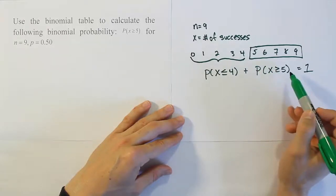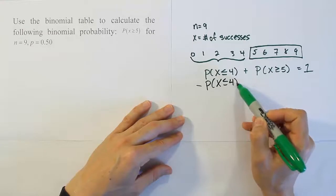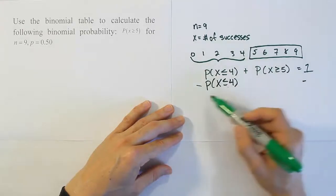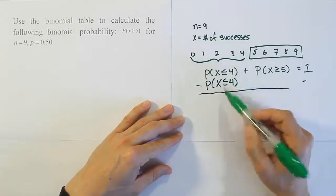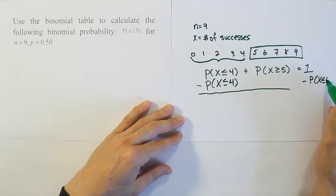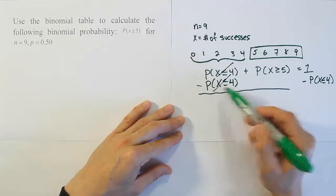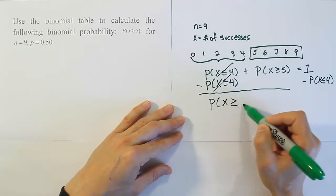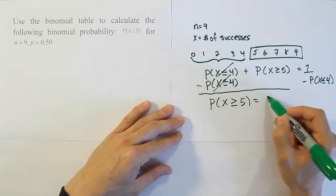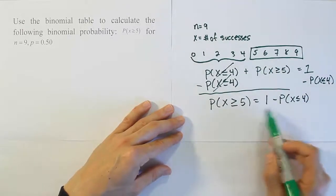Subtract something from the left-hand side, I have to subtract it from the right-hand side. When I do that, I get an expression. This cancels out. I end up with the probability that x is greater than or equal to 5 is equal to 1 minus the probability that x is less than or equal to 4. And so that becomes my answer.